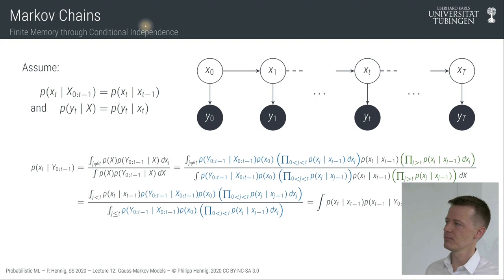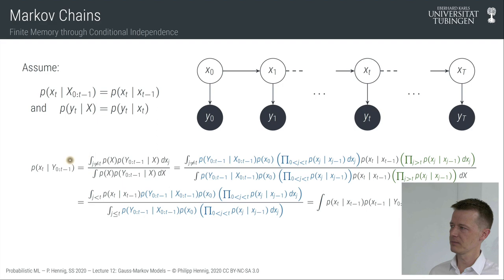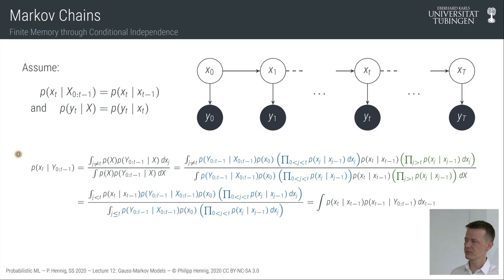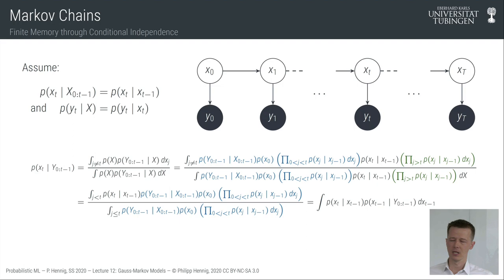I'll show you the result of this derivation first, then do the detailed derivation. It turns out that this predictive distribution can be simplified into an expression where you take your posterior from the previous step — over state x_{t-1} given data up to t-1 — multiply it by this predictive conditional from our assumptions, and marginalize over x_{t-1}. This particular equation is called the Chapman-Kolmogorov equation.